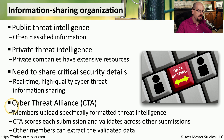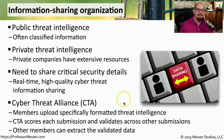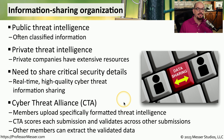An example of this is the Cyber Threat Alliance, or CTA. This is a group of organizations that gather details about these threats, put them together into a standard format, and distribute that information to everyone else in the alliance. The alliance will validate each submission and score those submissions to set a severity level for that threat. Everyone in the alliance can then view that threat intelligence and decide how they want to use it with their network.